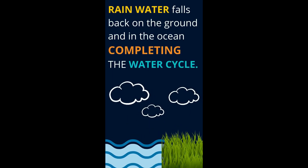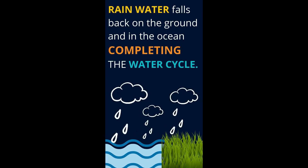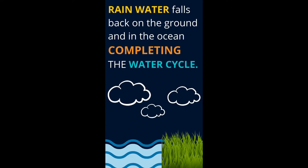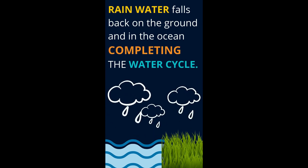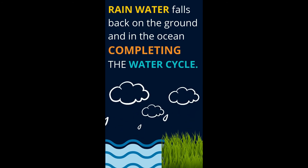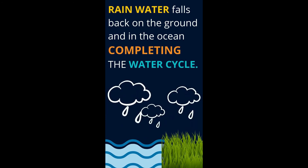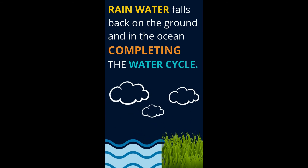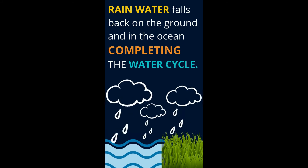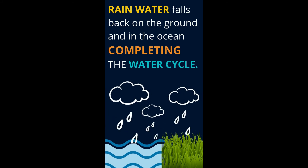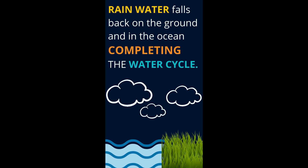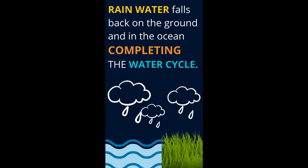What happens to all those water droplets that formed clouds? When it gets heavy — when all these water droplets become heavy — it rains. The rain water falls back on the ground, the same water that went up from the ocean and the ground during evaporation. Now this water has gone up, turned into clouds, and it's coming back, falling back on the ground and into the ocean. And that is what completes the water cycle. The rain is coming from the clouds.